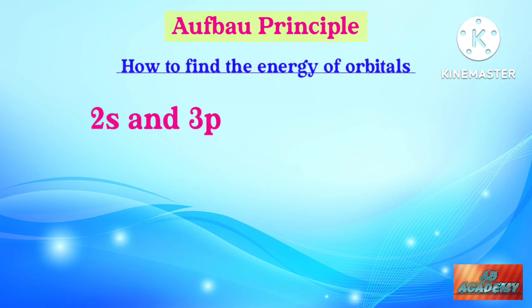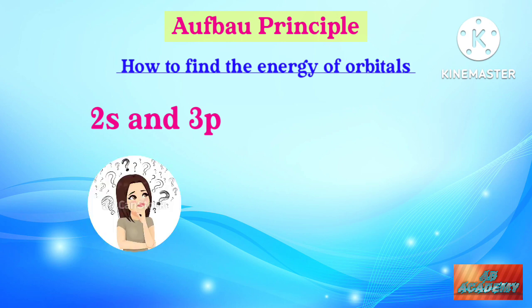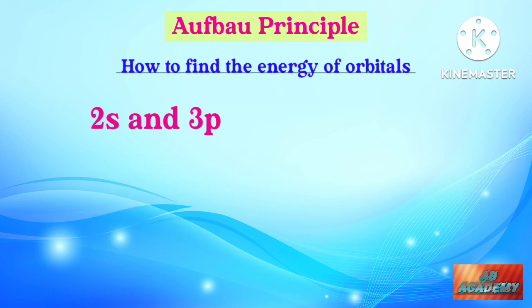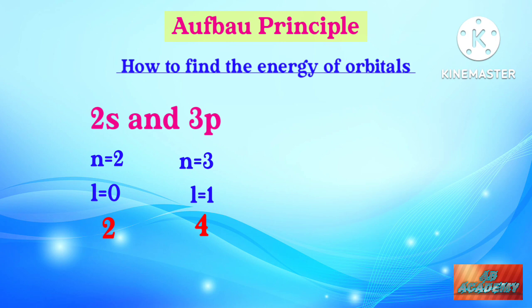Consider 2s and 3p — which orbital has more energy? In the case of 2s, n equals 2 and l equals 0, so n plus l equals 2. In the case of 3p, n equals 3 and l equals 1, so n plus l equals 4. Thus, 3p has more energy than 2s. Therefore, according to the Aufbau principle, electrons will firstly fill the 2s orbital due to its lower energy.